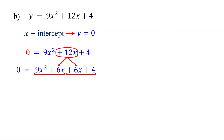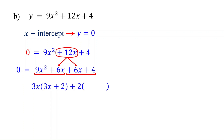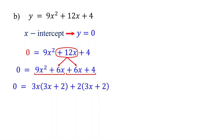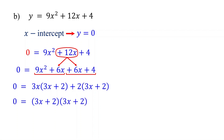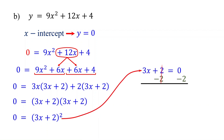In the first group, the GCF of 9x² and 6x is 3x. To find what goes in the parentheses, divide each term in the group by 3x. 9x² divided by 3x is 3x, and 6x divided by 3x is 2. In the second group, the GCF of 6x and 4 is 2. Divide each term in the group by 2: 6x divided by 2 is 3x, and 4 divided by 2 is 2. Next, factor out the common factor for both groups, which is (3x plus 2). This leaves behind (3x plus 2) as the other factor. Notice that the two factors are the same, which is the same as (3x plus 2) squared. Setting 3x plus 2 equal to 0 and solving for x, we find that x equals negative 2 thirds.